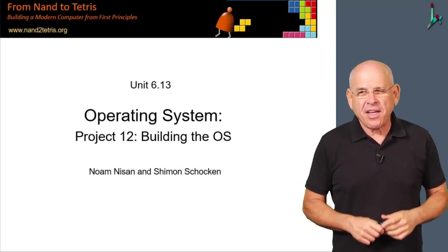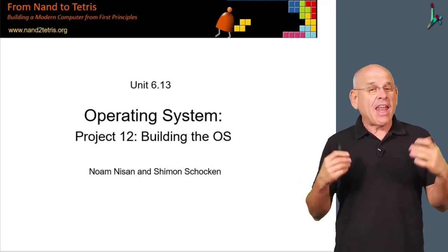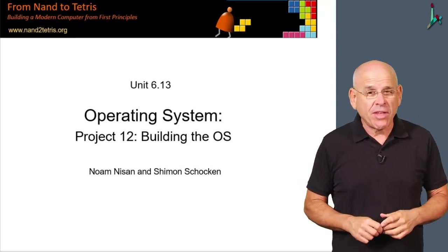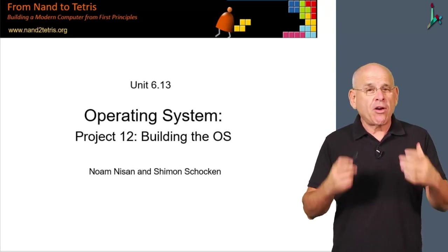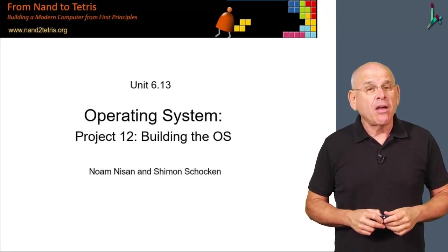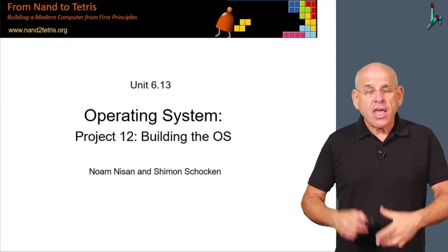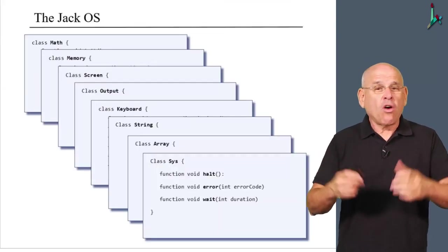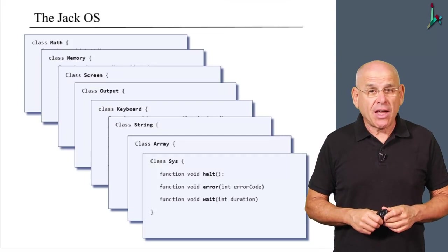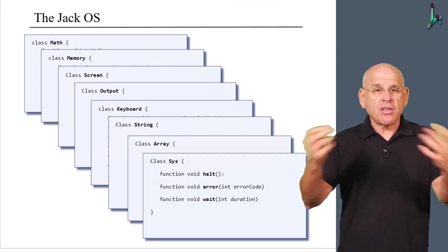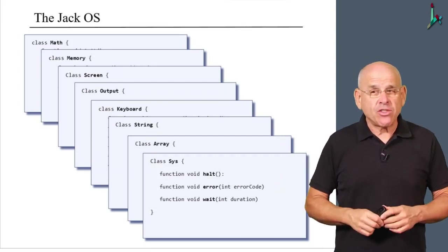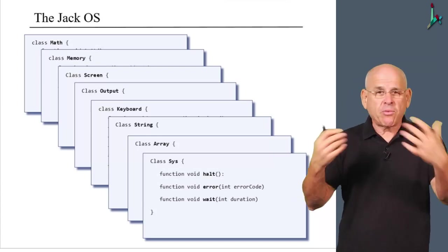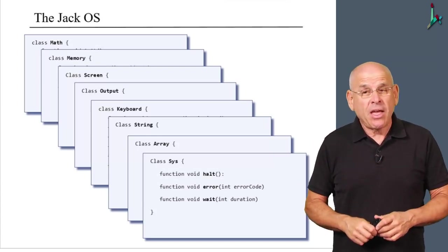So, here we are in project 12, the last and final project in Nand2Tetris, in which we are going to build our operating system from the ground up. Here is the operating system in all its glory, consisting of eight different classes, each designed to service some functionality like memory management, screen management, keyboard management, and so on.